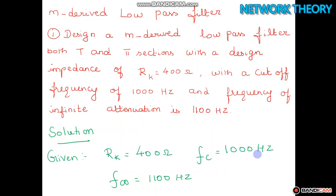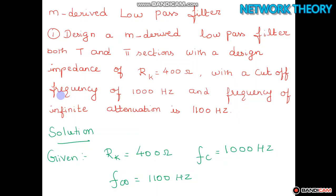Hi all. In this video we will see an exercise problem on the design of an M-derived low-pass filter. The question is: design an M-derived low-pass filter for both T and pi sections with a design impedance Rk equal to 400 ohms, a cutoff frequency of 1000 Hz, and a frequency of infinite attenuation of 1100 Hz.